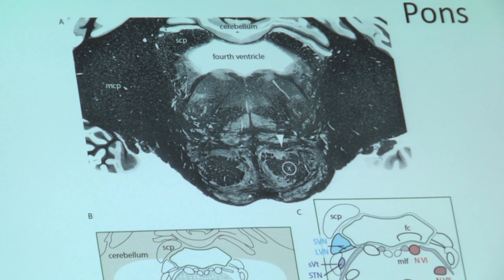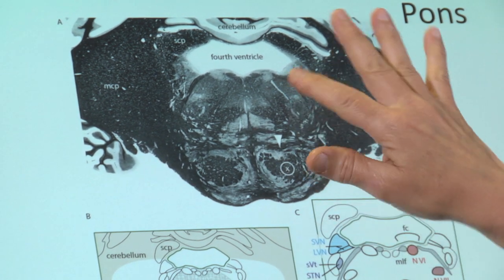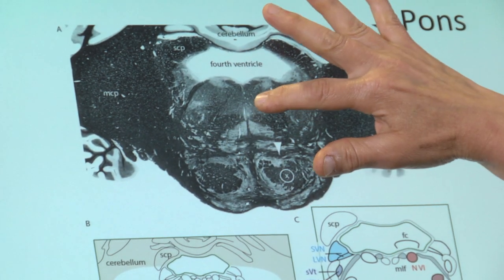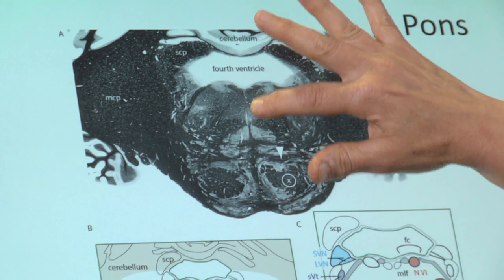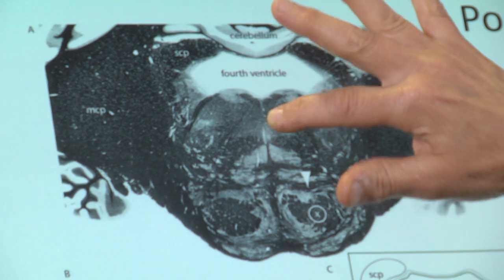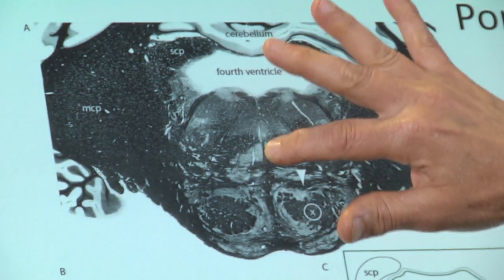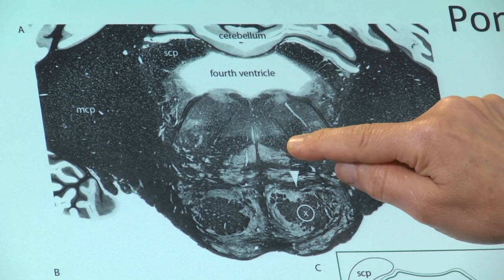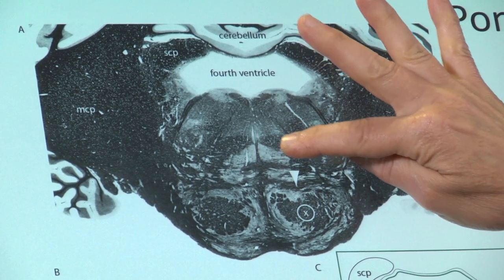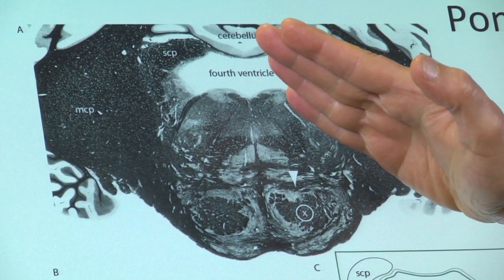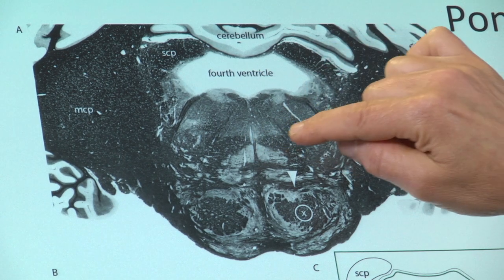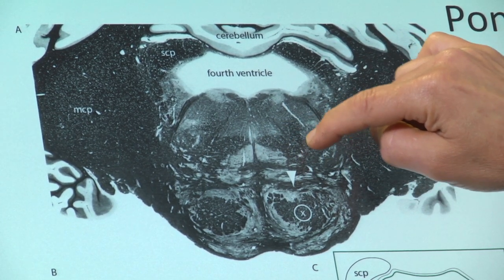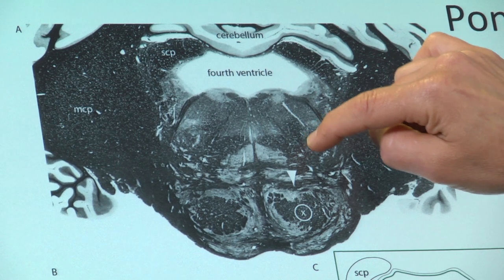Now we want to find the medial lemniscus. In the medulla we would expect it to be oriented vertically, but what we see is that the medial lemniscus has turned — it is now oriented horizontally. This is the medial lemniscus, and next to it is the spinothalamic tract.